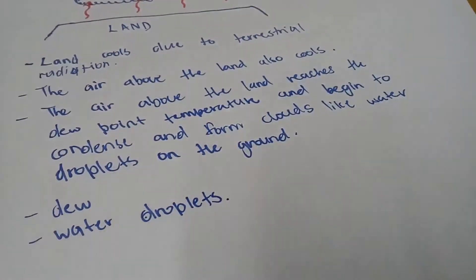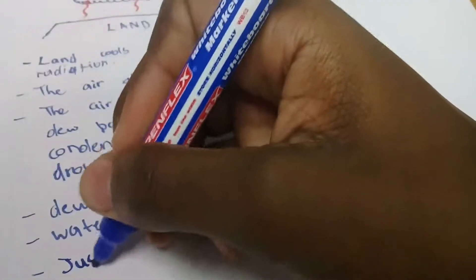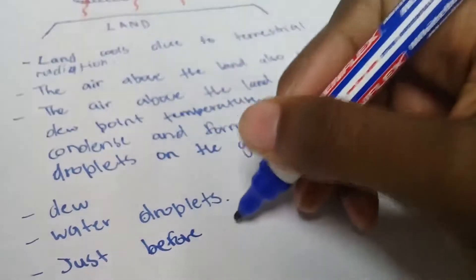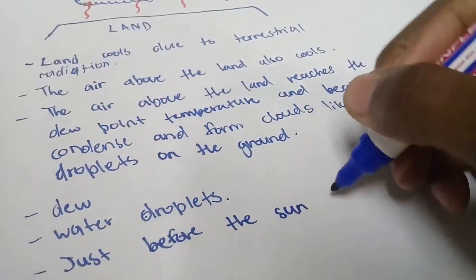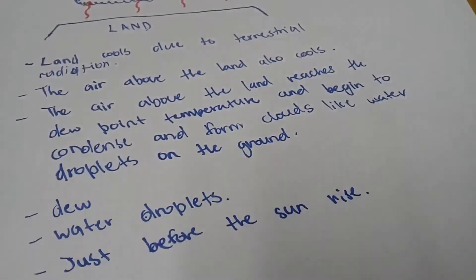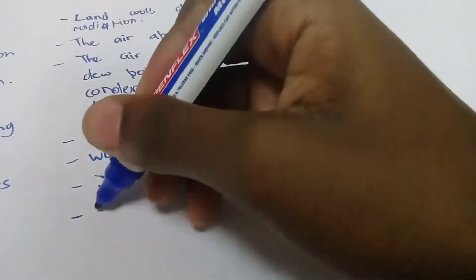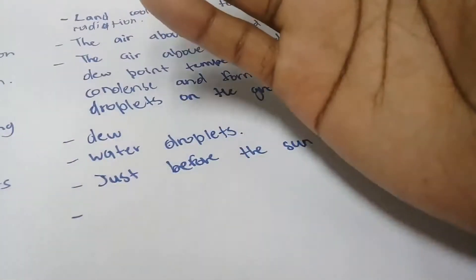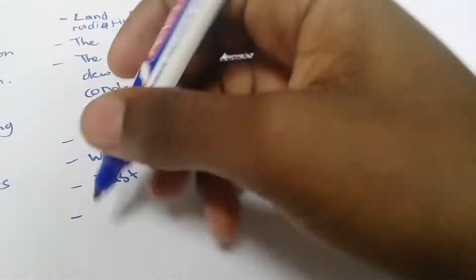During the morning we experience and see these water droplets — that's the mist and so on. You see them just before the Sun rises, just before sunrise, because when the Sun rises the fog is lifted upwards by the evaporation process.